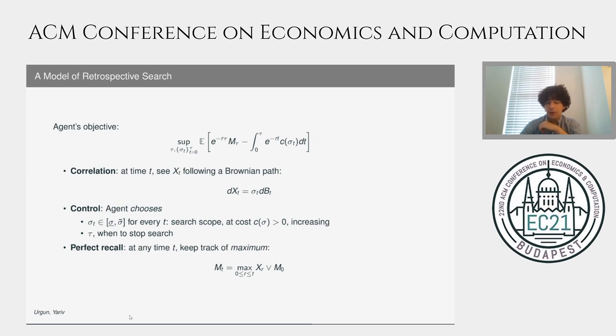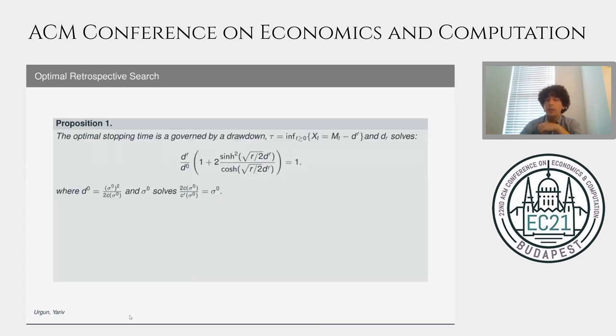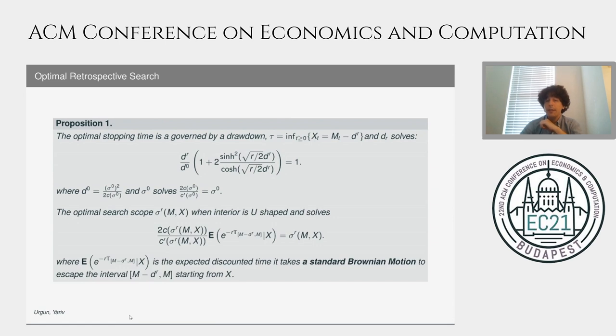It turns out in a problem like this, it is optimal to stop when you see a fixed distance called a drawdown from the best outcome you have seen, which we deliver in closed form. And the optimal ambition, the search scope, is a U-shaped function of the distance between the observations.